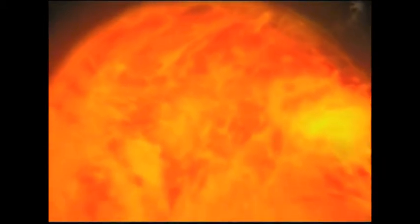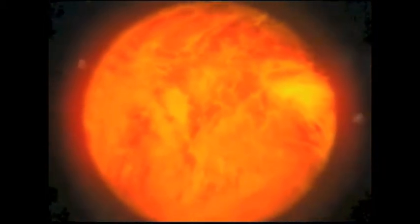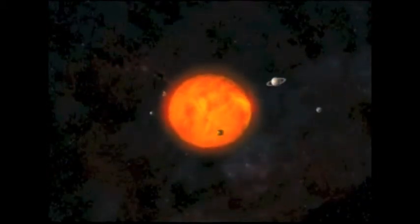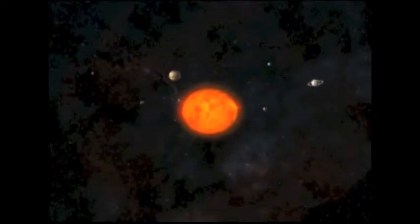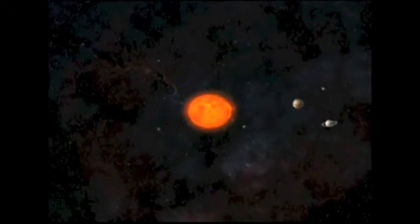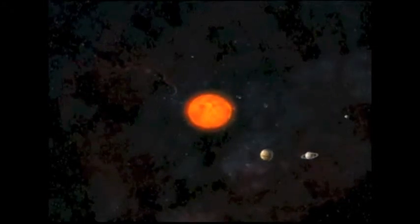Our home star's diameter is 864,900 miles, 109 times greater than that of the Earth. Because of its immense size, the Sun has a powerful gravitational force. Powerful enough to hold eight planets, more than 200 moons, and countless other celestial bodies in orbit.